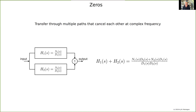Multiple transmissions: if we have an input-output system with two transfer paths, you can simply add them. You can calculate that there will be zeros defined by the numerator and the denominator, and it is not easy to estimate the nature of all the transfers.